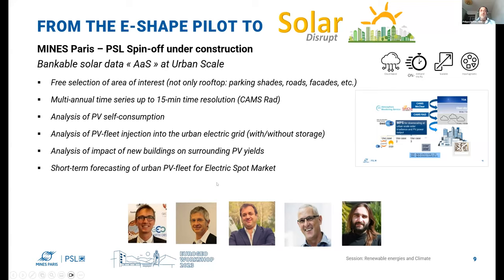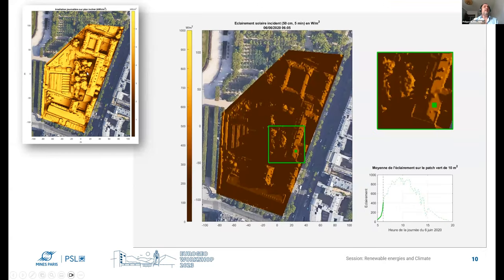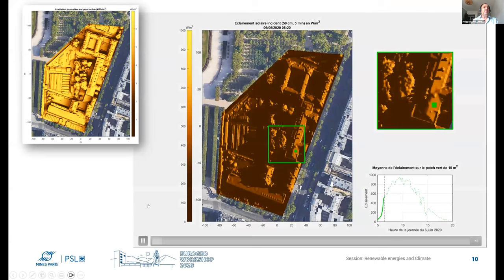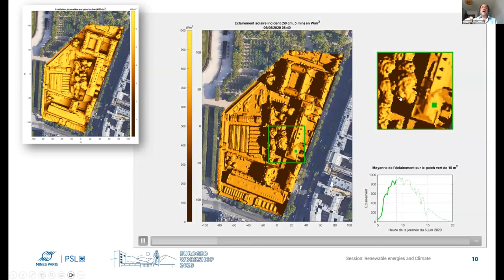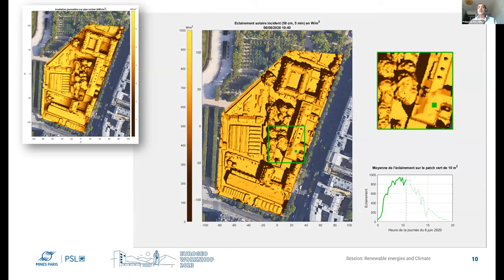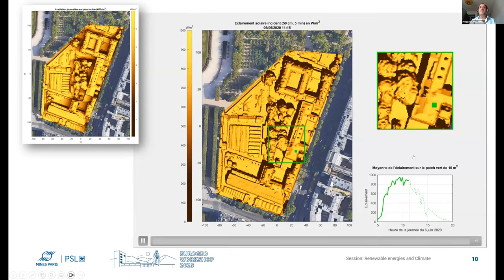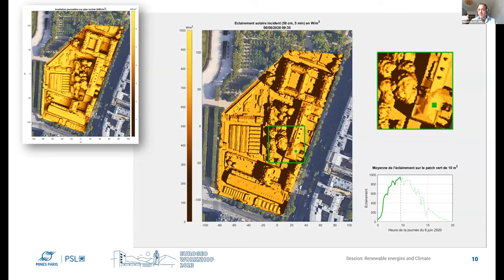Compared to static solar cadastre — such as what Google provides showing shadow on a daily or yearly basis — the time-resolved approach provides time series for each pixel. Zooming in on a section of a roof and selecting a part of it, you can obtain the plane-of-array (POA) irradiance arriving at that location, from which simulating PV outputs becomes straightforward.